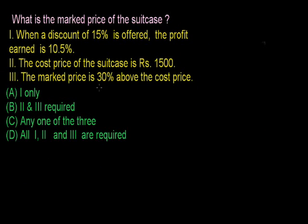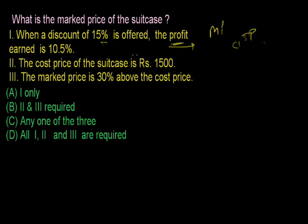What is the market price of the suitcase? Statement 1: When a discount of 15% is offered, the profit earned is 10.5%. This gives discount and profit but no absolute values, so I cannot calculate the exact market price. Statement 2: The cost price of the suitcase is 1,500. Knowing only the cost price, I cannot comment about the market price. Statement 3: Market price is 30% above the cost price.